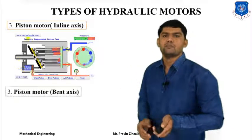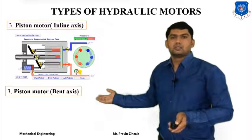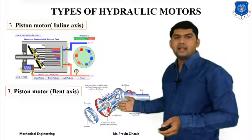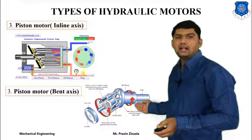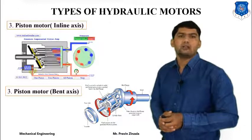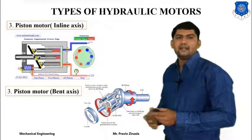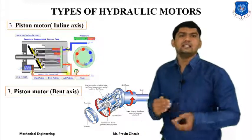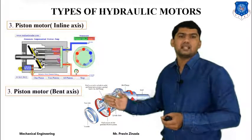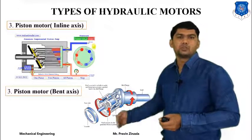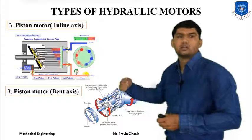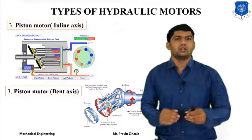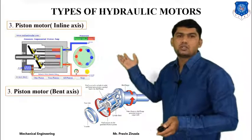The second piston motor type is the bent-axis piston motor. The difference between inline axis and bent-axis is that in the bent-axis type, the rotating barrel and the axis of the shaft are at an angle — so it is called bent-axis. There is no requirement for an inclined plate because the angle is already built in. Whenever pressurized energy is supplied to the piston, the piston applies force to the bent-axis barrel and we get rotary motion. The construction is similar to the bent-axis piston pump but opposite in function.